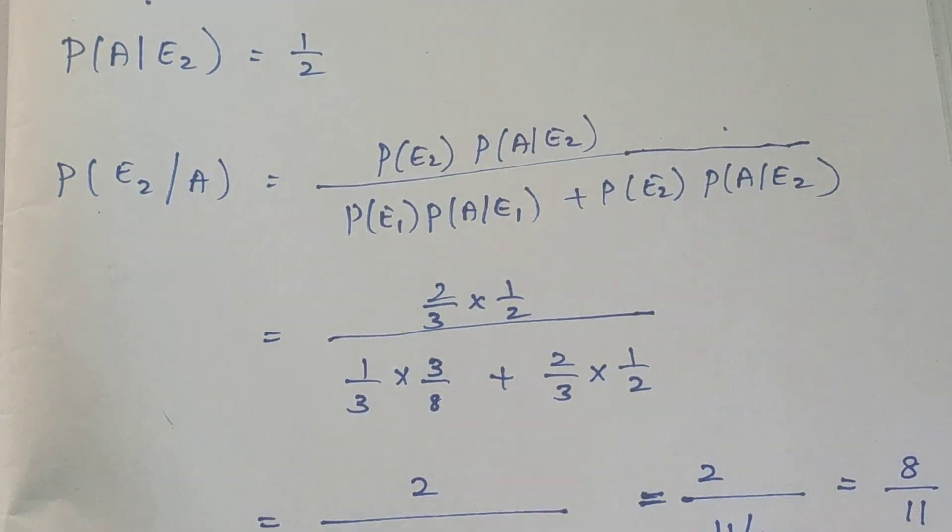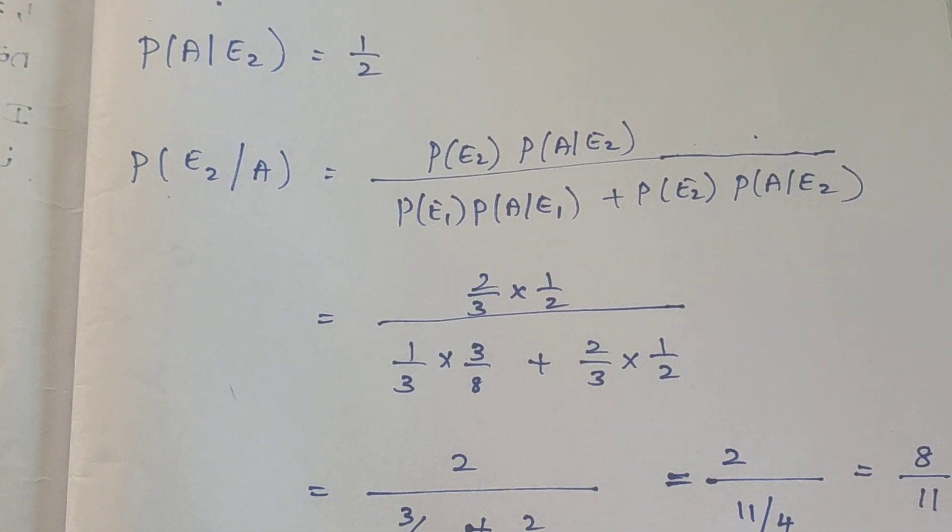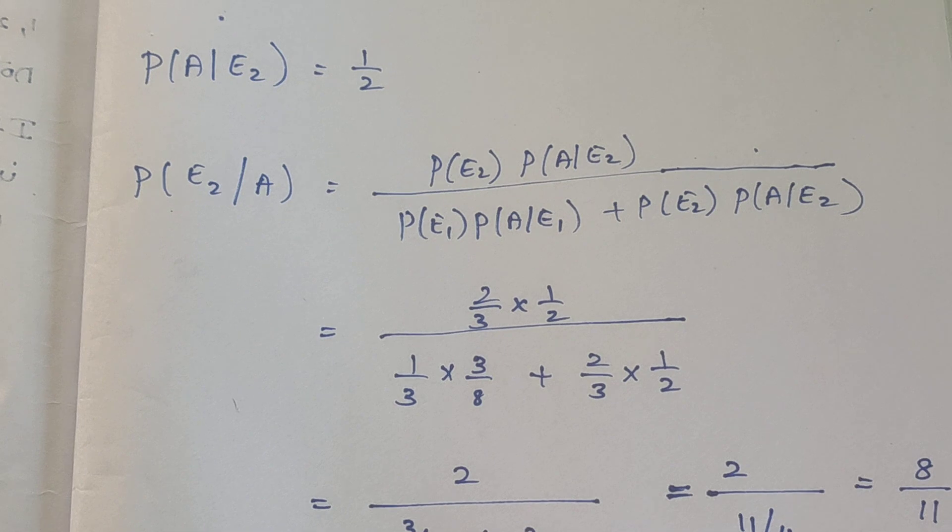So that's the probability of E2. The answer is 8 by 11. If you found this helpful, share, subscribe, and don't forget to click the bell icon. Thank you.